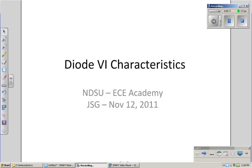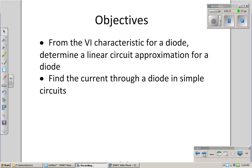Here I'd like to look at what the voltage VI characteristics are for a diode. The objective is, from the VI characteristics, determine a linear circuit model that allows us to analyze circuits containing diodes and find the current through a diode in a simple circuit.